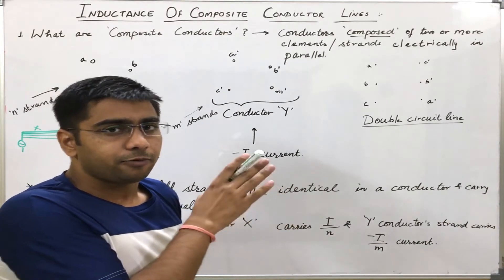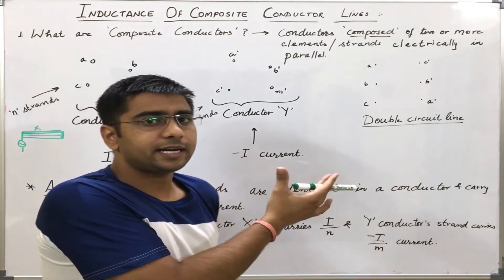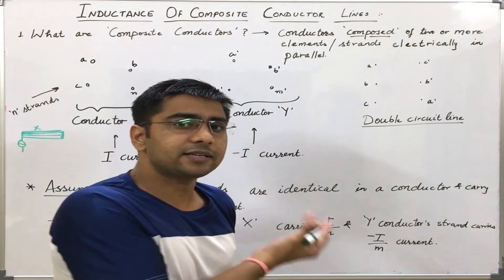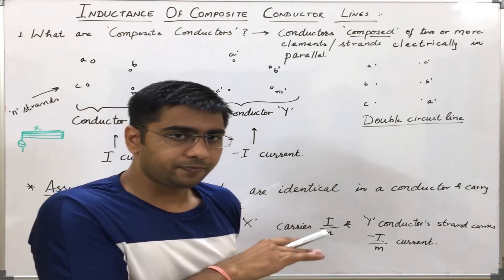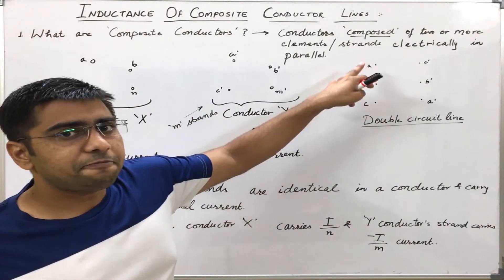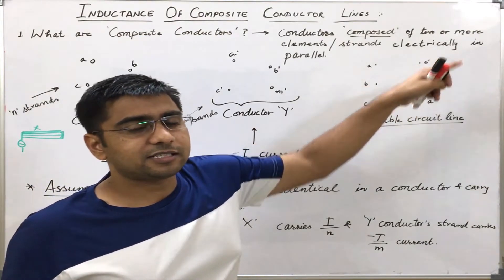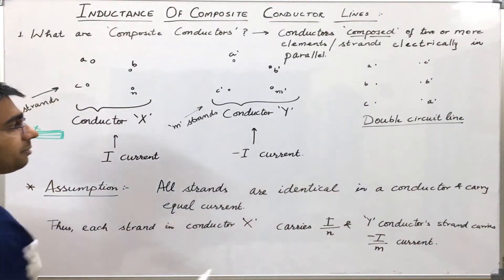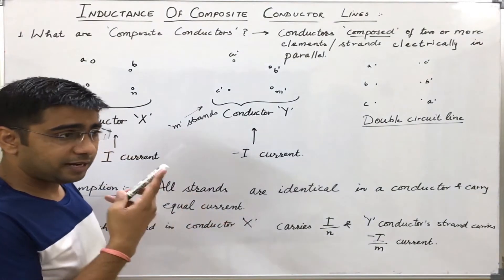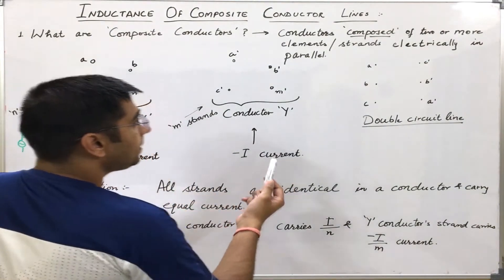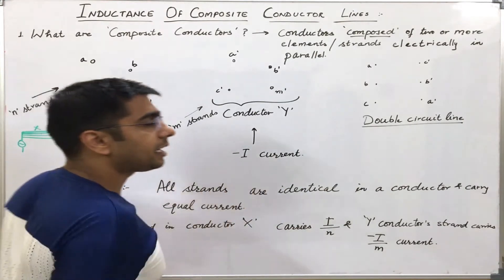To give a hint: what we want to do here is that we want to increase the geometrical mean radius of the system so that the inductance is reduced. That's why we are trying to place the same phase conductors at the maximum possible distance away. Similarly, C and C dash are being put diametrically opposite to each other. In this way, we are trying to reduce the inductance of the double circuit line.